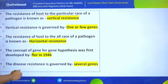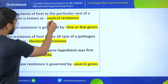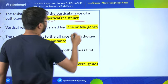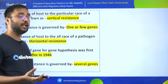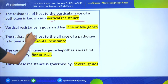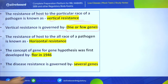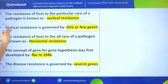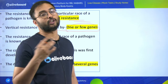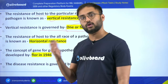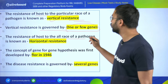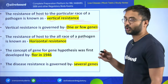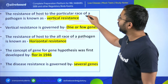The resistance of a host to a particular race of pathogen is known as vertical resistance. You should know about these terms related to resistance and their multiple types. Vertical resistance is governed by one or few genes. Resistance of a host to all races of pathogen is known as horizontal resistance.